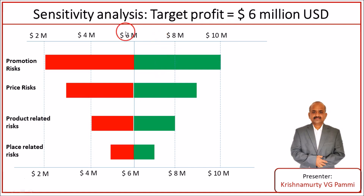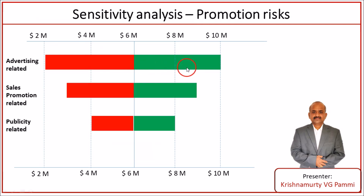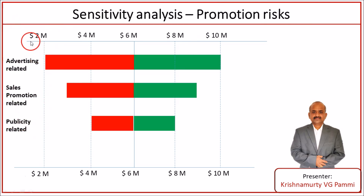Now we have a question: what risks within promotion risks are impacting our project targets to a greater extent? We can construct another sensitivity analysis to achieve this. Within the promotion risks, we first list down all risks within the promotion category — advertising related, sales promotion related, publicity related, and so on.